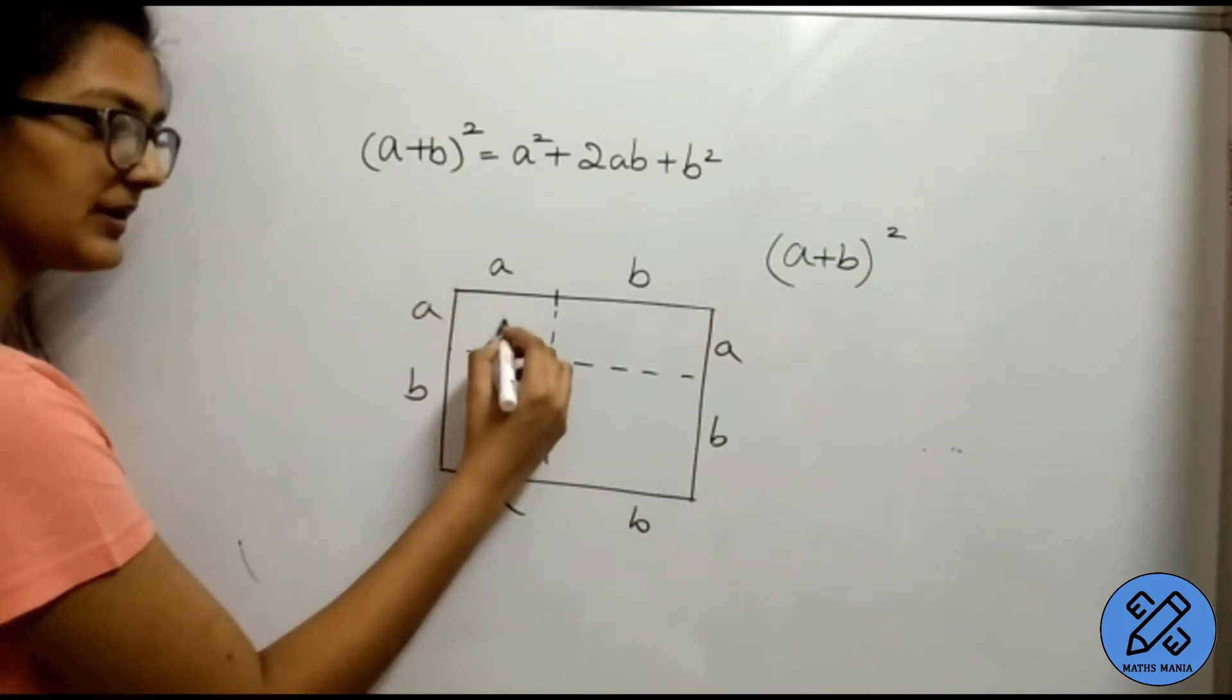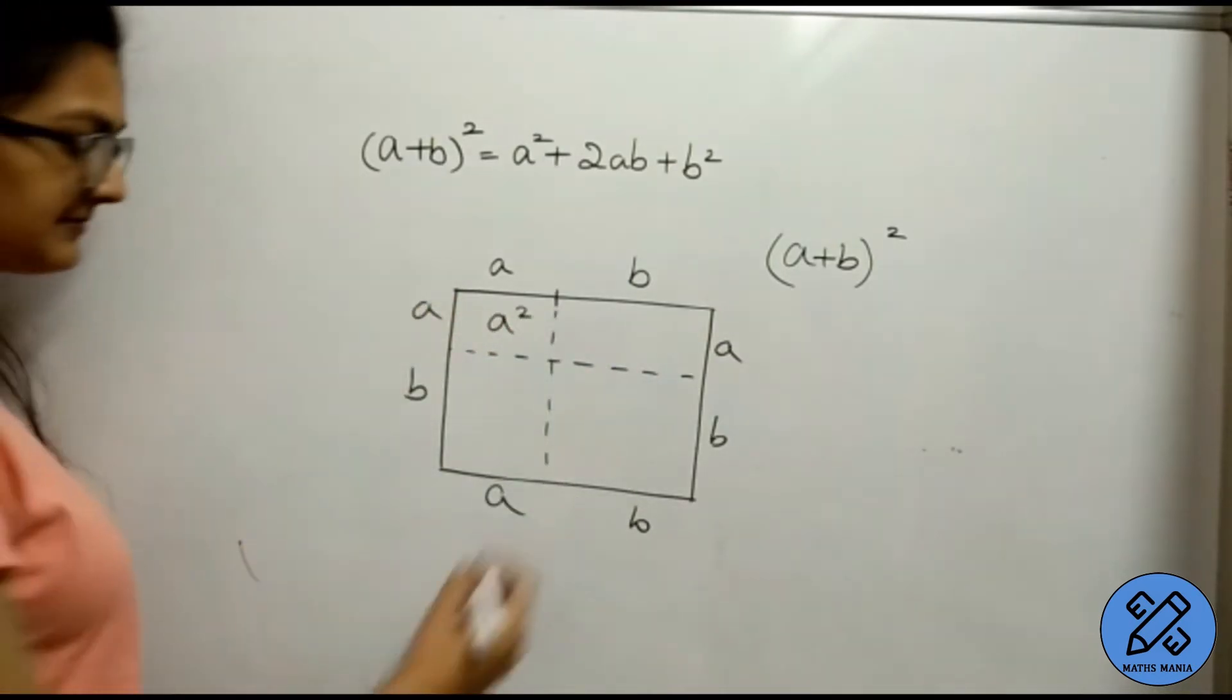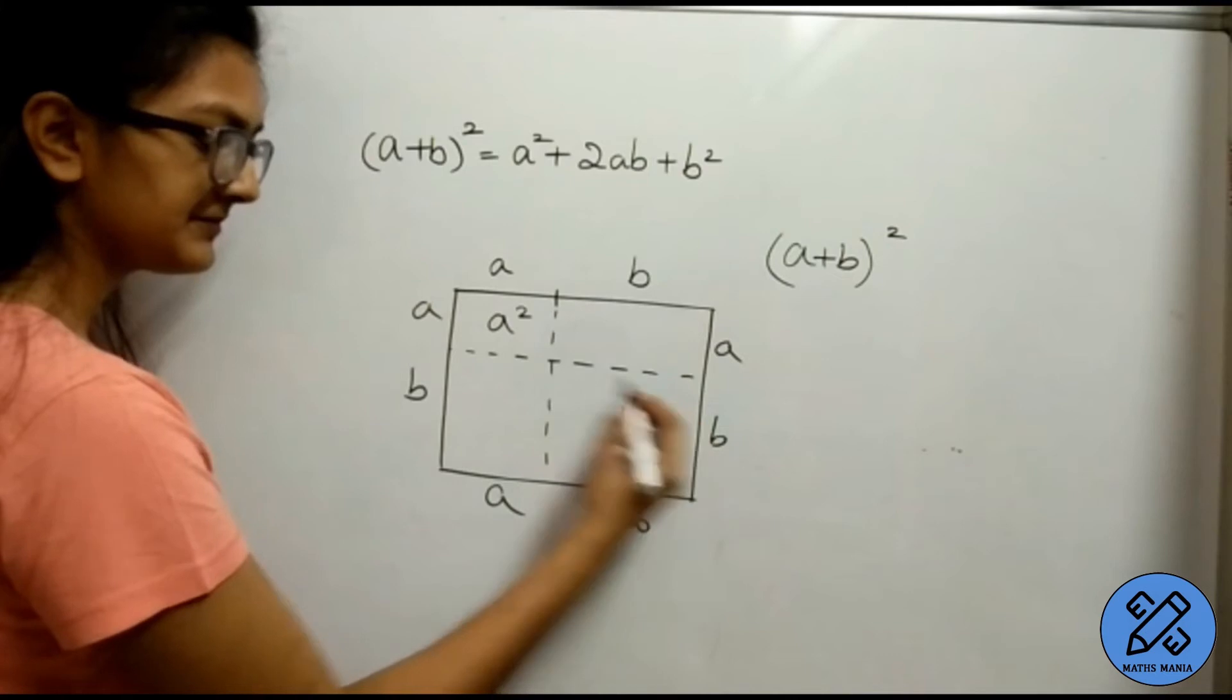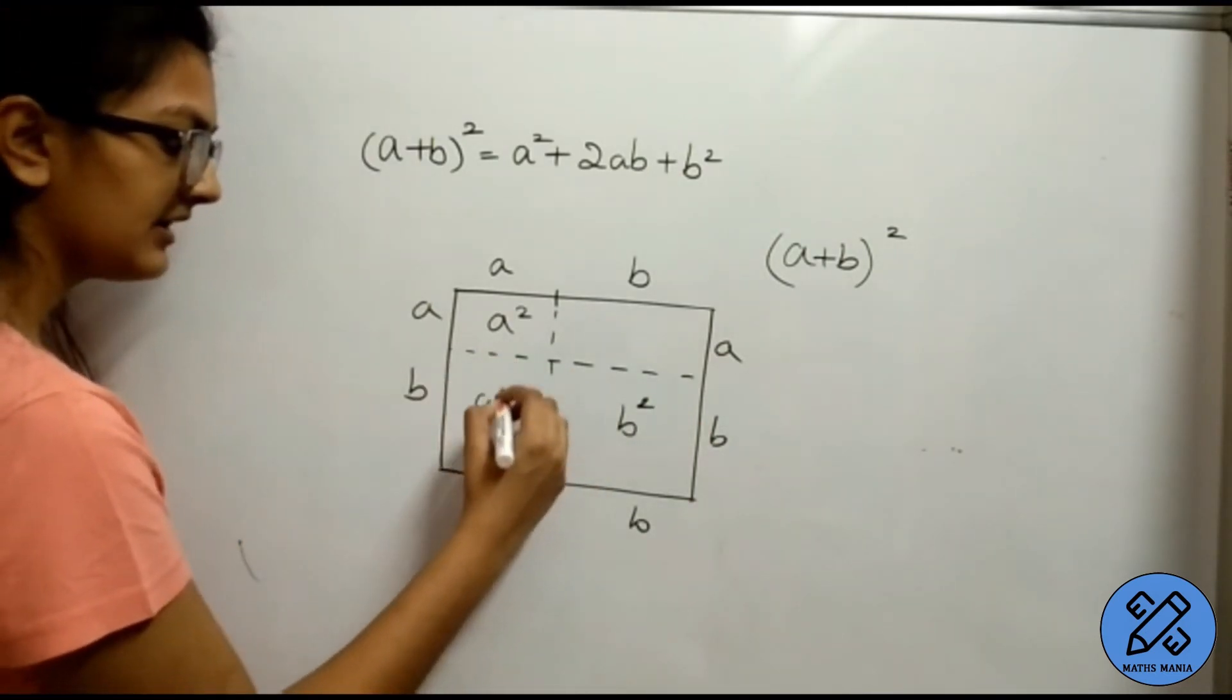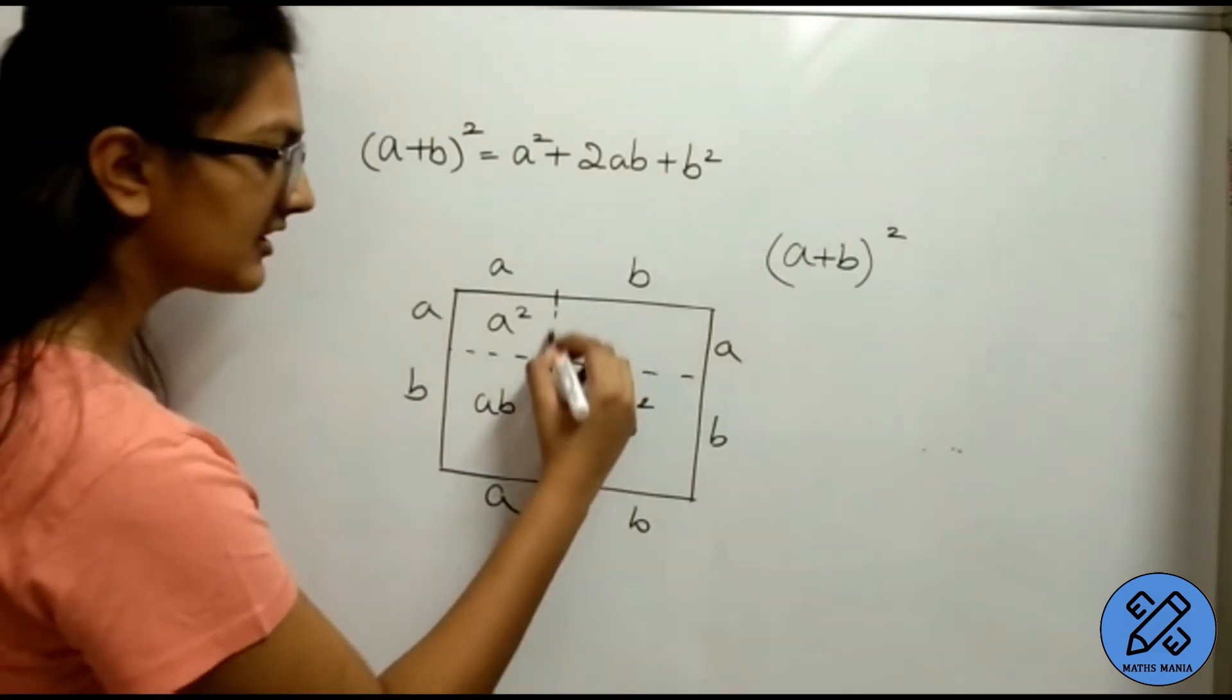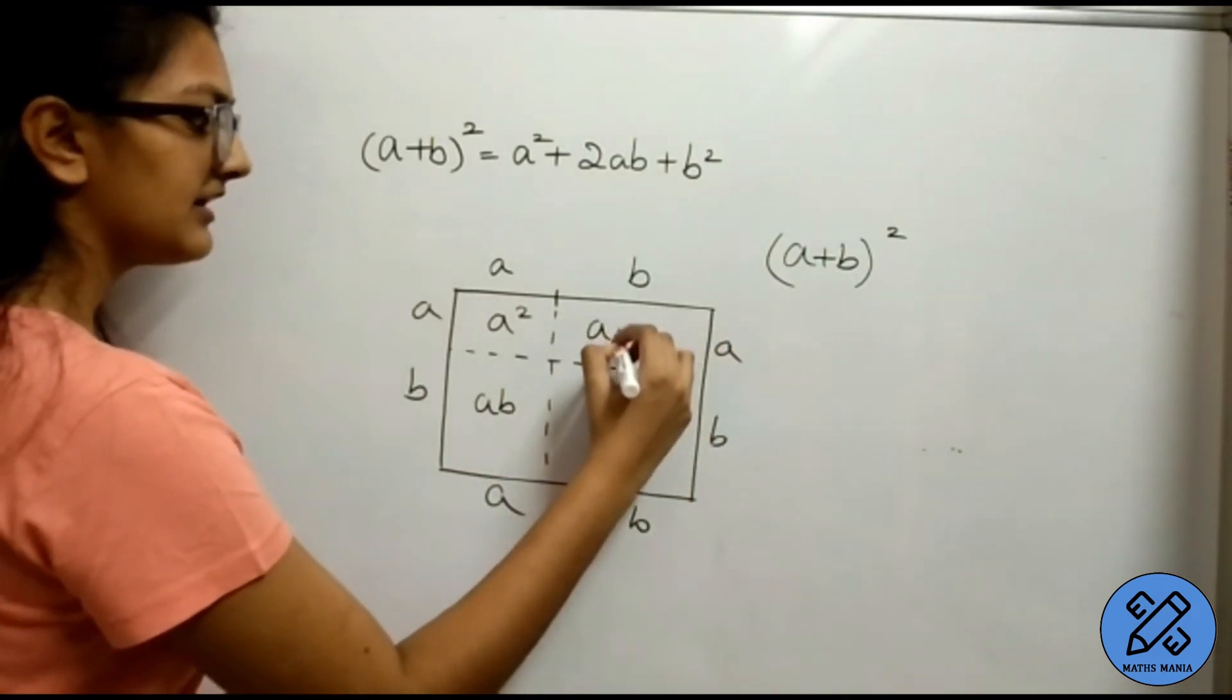Now, what is the area of this square? a square. Area of this square, b square. Area of this rectangle? ab. Area of this rectangle? ab.